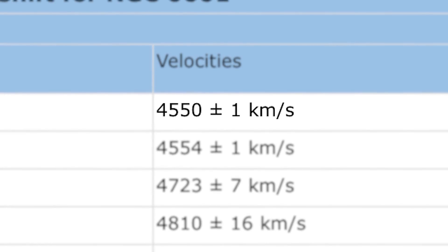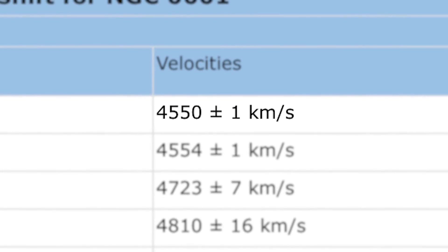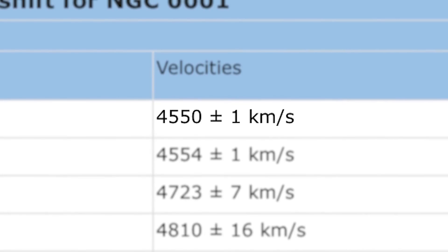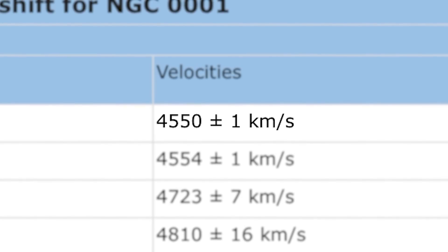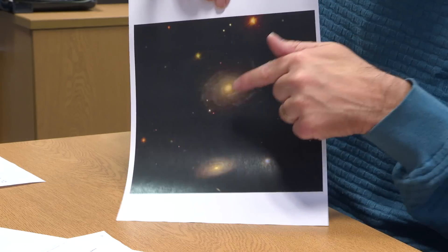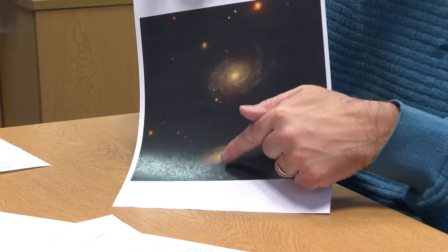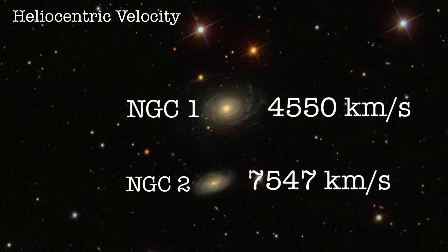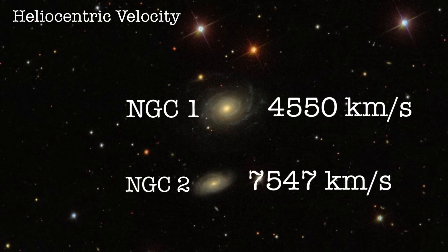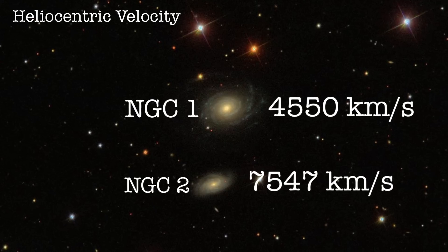So that was NGC 2 — remember that seven and a half thousand kilometers per second. Going back to the bigger galaxy NGC 1, you do the same measurement and get four and a half thousand kilometers per second. Smaller velocity means smaller distance, so as your intuition probably told you, NGC 1 is about 50% closer than NGC 2 — quite a lot closer.